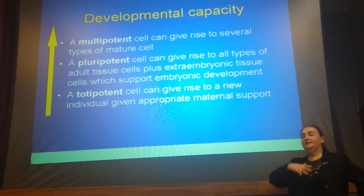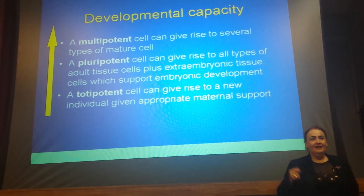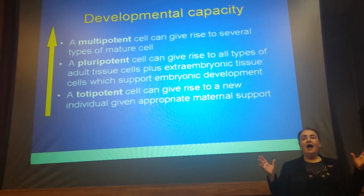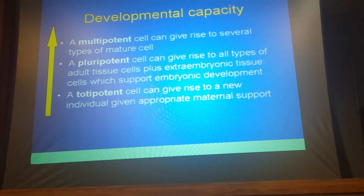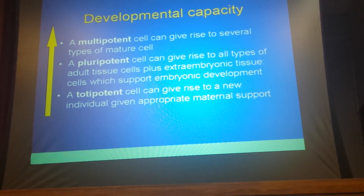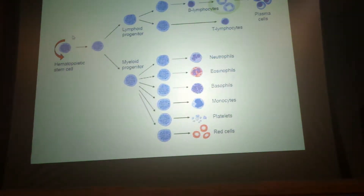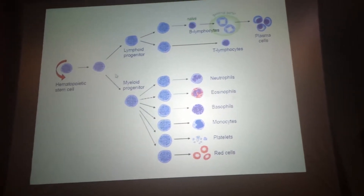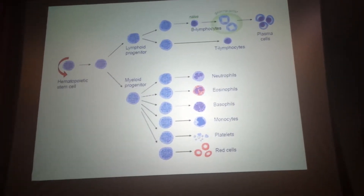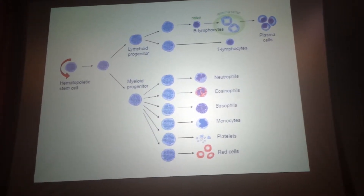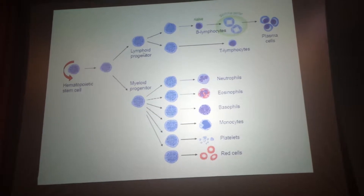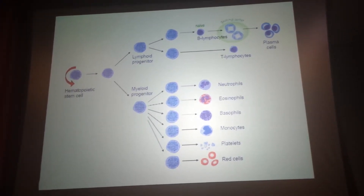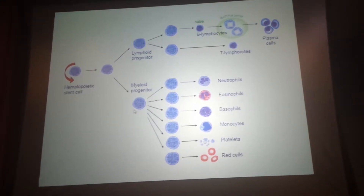Totipotent means total potency — that would be your embryonic stem cell, like Dolly the sheep, where you can grow the whole animal out of it. Pluripotent — pluri means many — means you can take this cell and grow several tissues but not the whole body. Multipotent means you can only grow a limited number of cells from this stem cell. The hematopoietic stem cell belongs to the multipotent stage, and you can only grow blood cells from it. It develops into a progenitor, which then divides into two major lineages: lymphoid progenitor and myeloid progenitor.